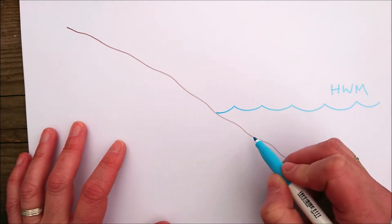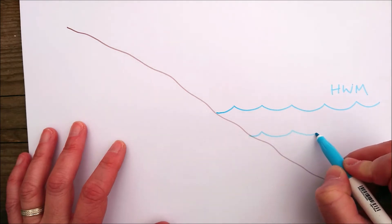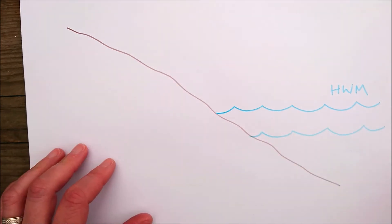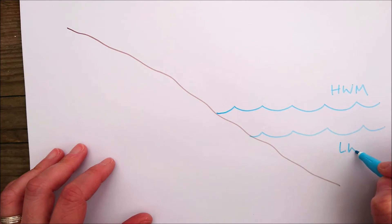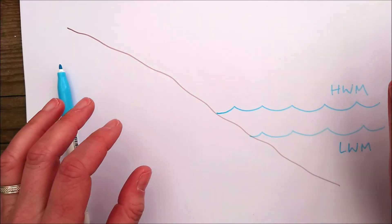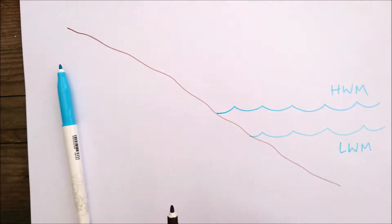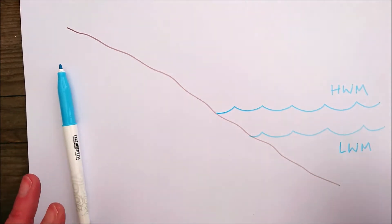Then when the tide goes out, the sea level reduces and we would call that the low watermark. Now erosion is going to take place wherever the water is moving against the land.